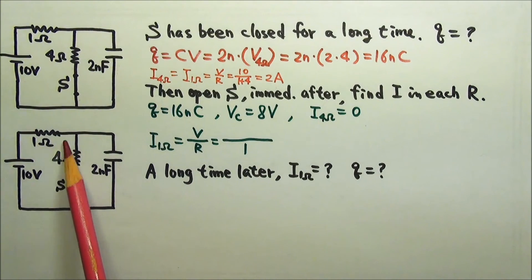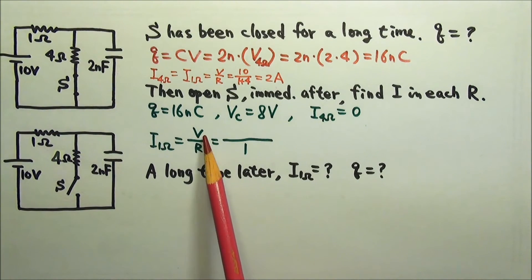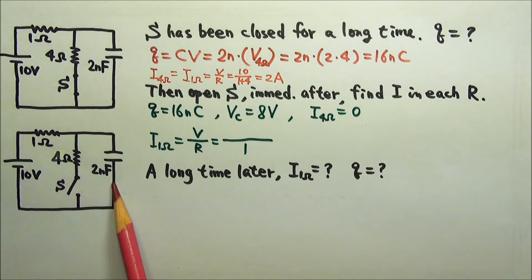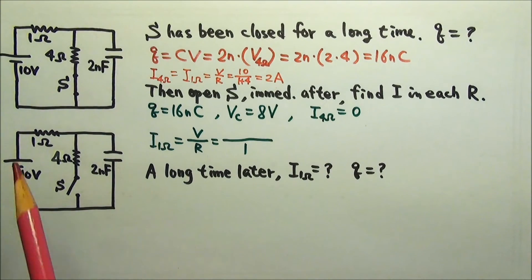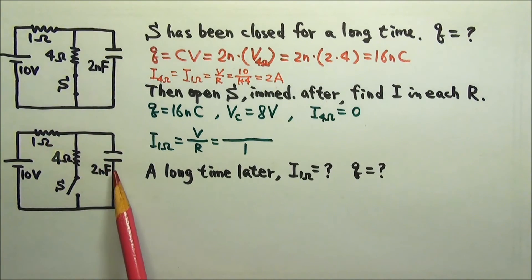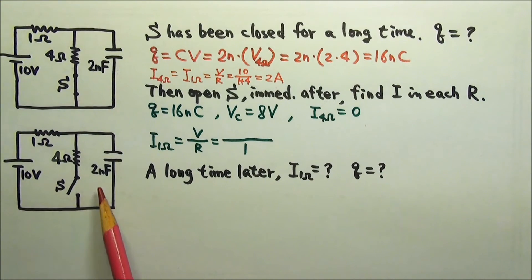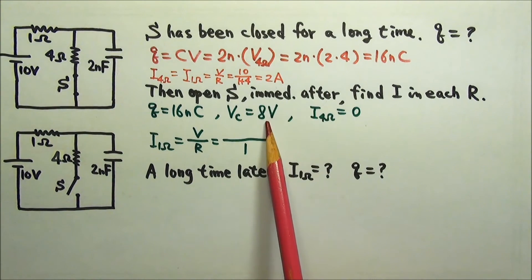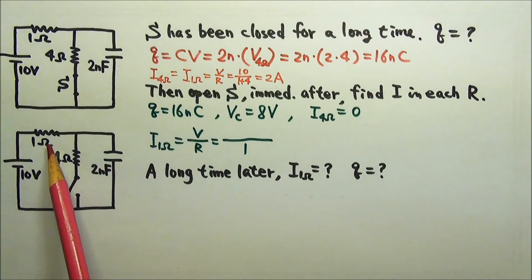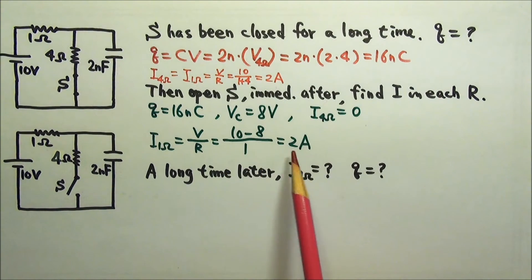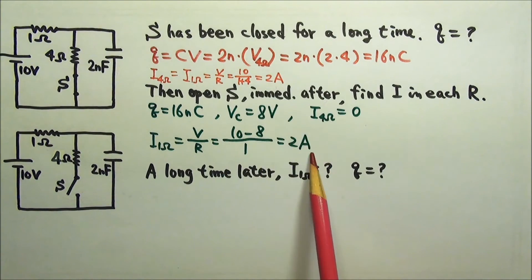To find the current through the 1 ohm resistor, we can do V over R. With the switch open, we only have one loop for current to flow, so the resistor and the capacitor are in series. Together they share the 10 volts from the battery. Since the 2 nano farad capacitor gets 8 volts, that means the 1 ohm gets 2 volts divided by 1 ohm, so the current is 2 amps.